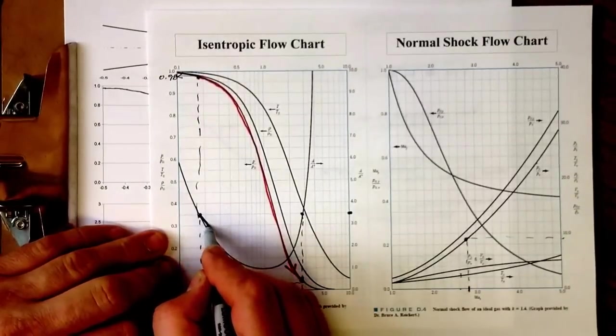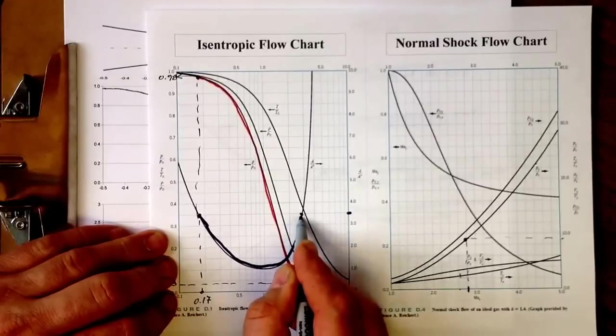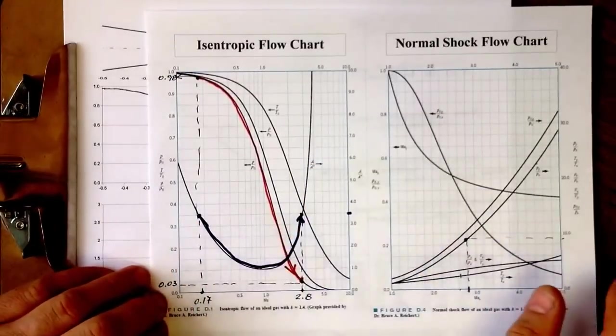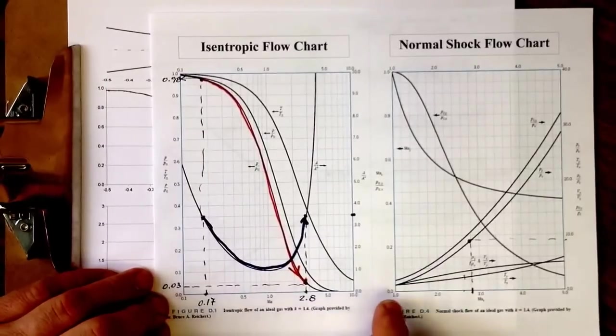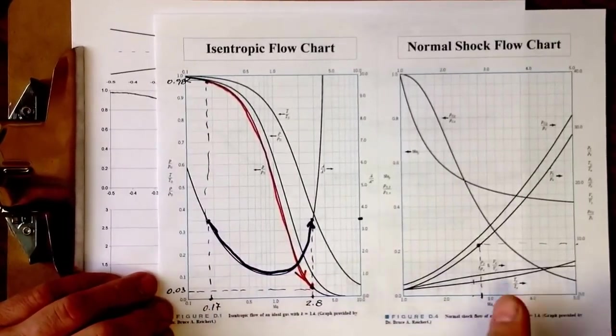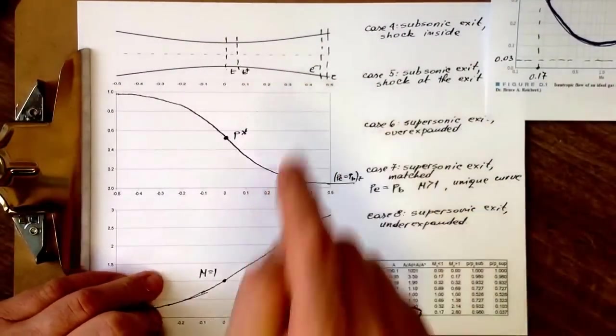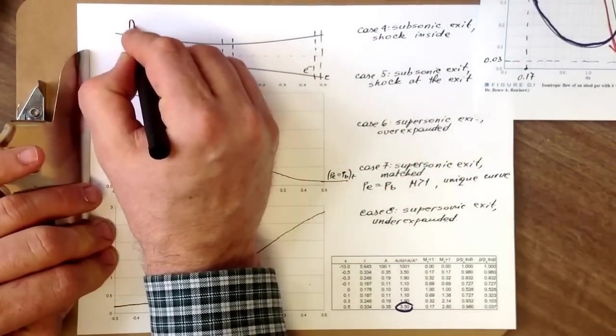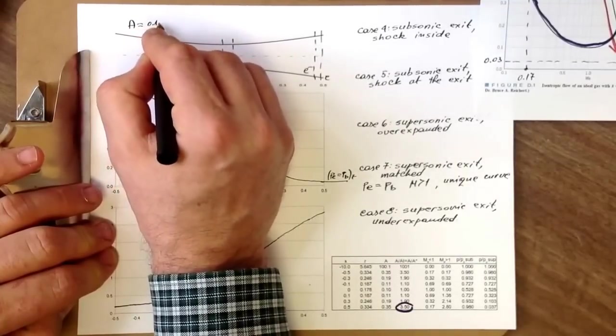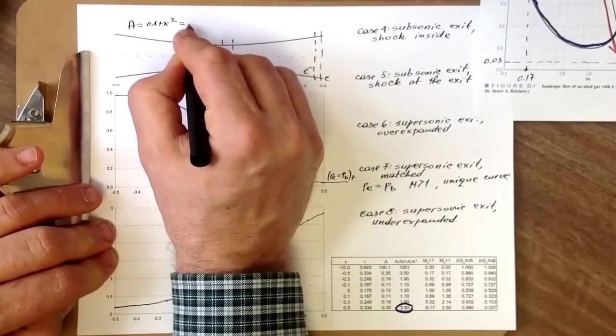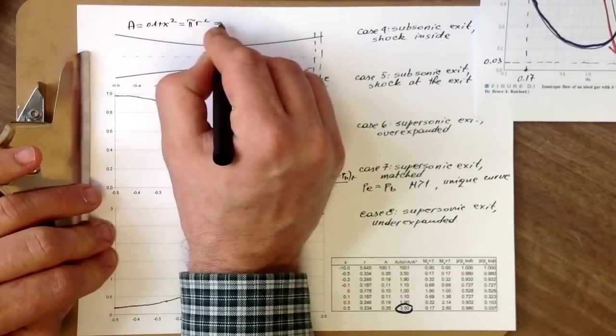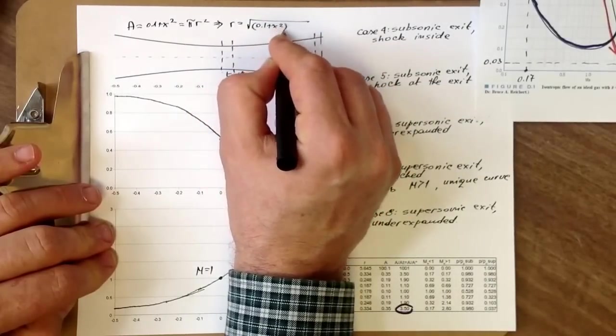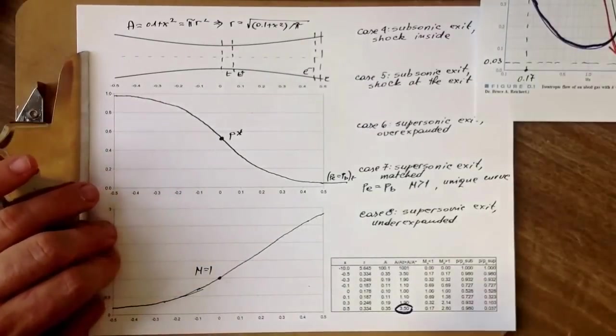The area change corresponding to that process is being governed by this relationship. You should not look at the shape of the area change as it has nothing to do with position x—it has to do with the relationship with Mach number. We have area A equals 0.1 plus x squared equals pi r squared, from which we get r equals square root of (0.1 plus x squared) divided by pi. These values are all contained here.